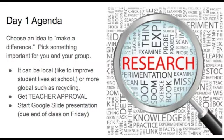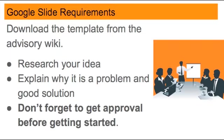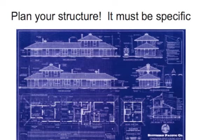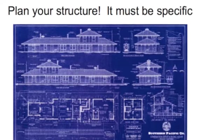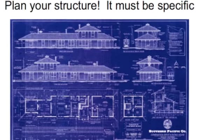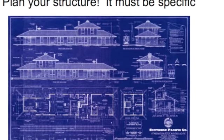Make sure you get approval from your teacher before getting started. You're going to do some research and think about why this is a problem and explain how your solution is going to help make a difference. You'll start by downloading a template from the advisory wiki, which will give you some ideas about how to get started with your research. After you have your topic approved, while some students do more research to explain the problem and proposed solution, others will start planning how to use the canned food to build a structure or model that illustrates how you want to make a difference.